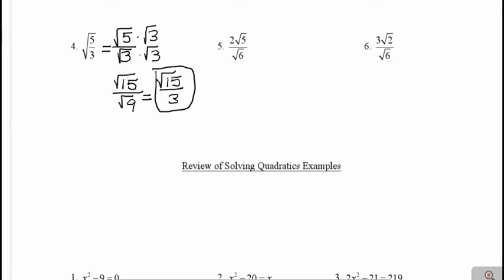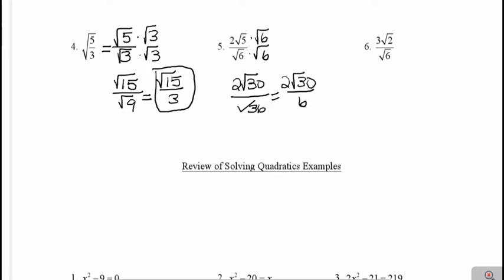In example 5, I can't have that square root of 6 in the denominator, so I'm going to multiply both the top and the bottom by that square root that I want to get rid of. So on top I would get 2 square root 30, and on the bottom I would get the square root of 36. I know I can simplify the square root of 36 to just 6. And then notice I can simplify this part of the fraction: 2 over 6 reduces to 1 third. So that would be the same thing as 1 square root 30 over 3. Always simplify completely to get that final reduced answer.